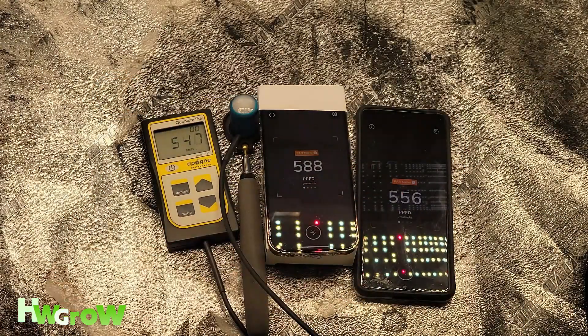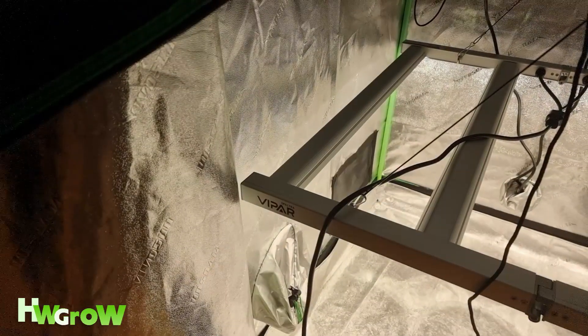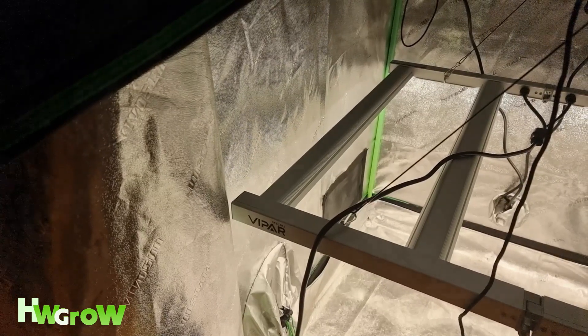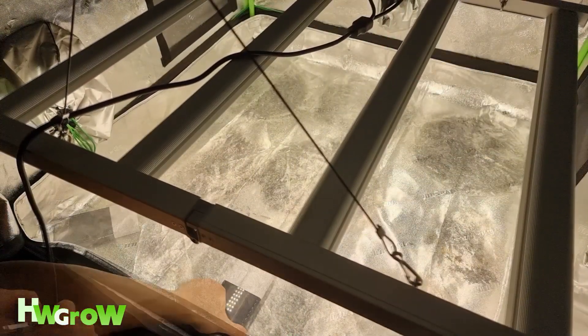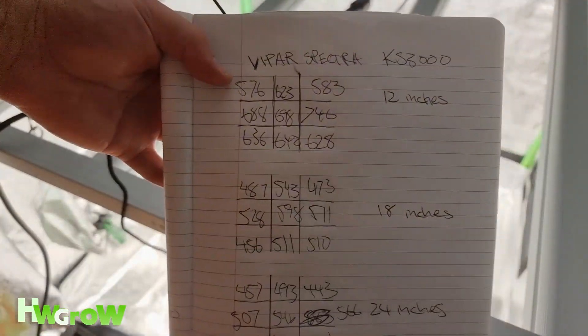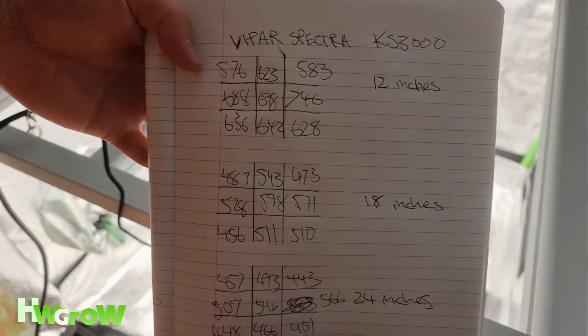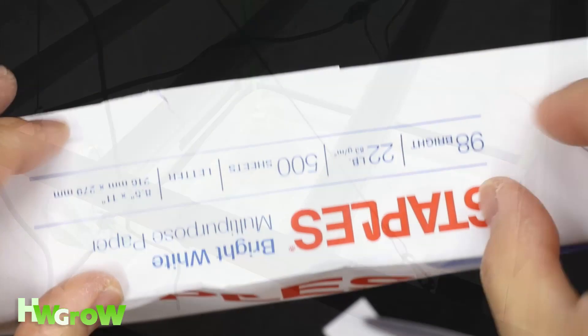The fact that Photone actually reads higher than Apogee shows that the bootleg readings that I had on my light reviews are actually better than the actual readings, which goes to show that these lights that I said were bad were even worse than what I recorded them at.